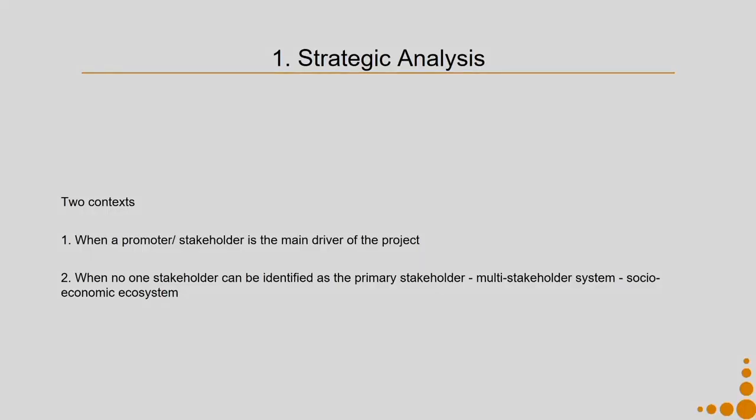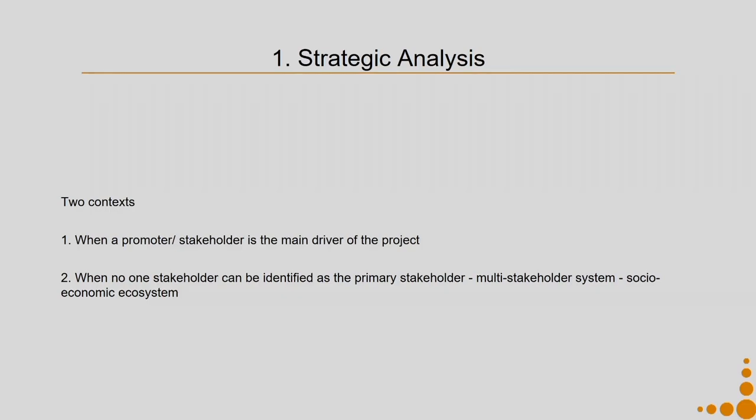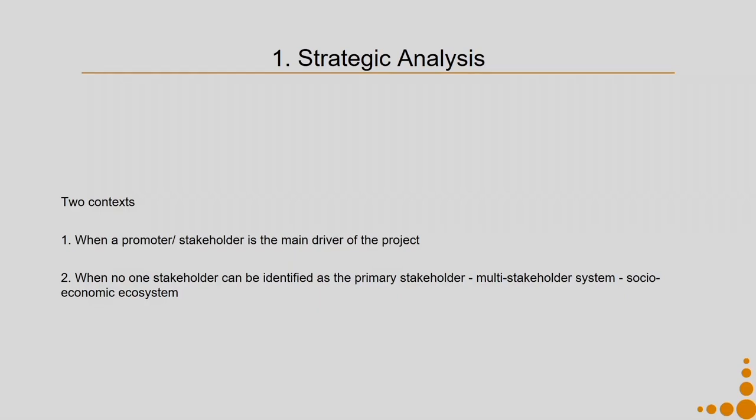You can also suggest SPSS to the promoter. In Context 2, there is no one stakeholder that can be identified as the primary stakeholder. It is a multi-stakeholder system — a socio-economic ecosystem wherein the economic activities of the community are dependent on their social ways of living, such as the craft sector, farming sector, and handloom sector. In Context 1, there is at least one group of promoters you can design for, whereas in Context 2, there are multiple stakeholders with no single main target.